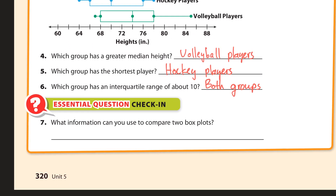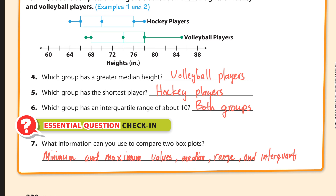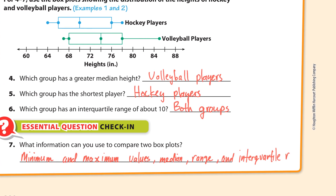What information can you use to compare box plots? Well, we could use the minimum and maximum values. We can also compare the medians, because that's what I did earlier. And I also compared the range and the interquartile range. And there you go — that's the down and dirty for the guided practice for lesson 10.2. Thanks for watching.